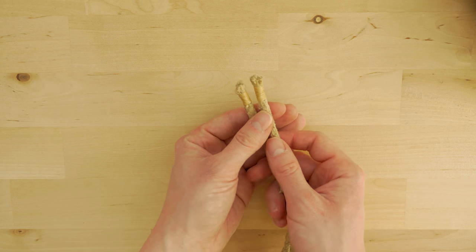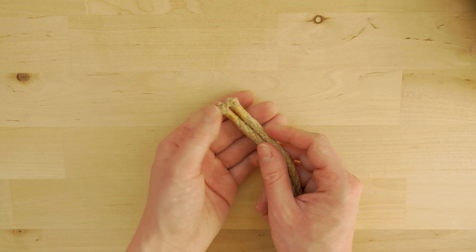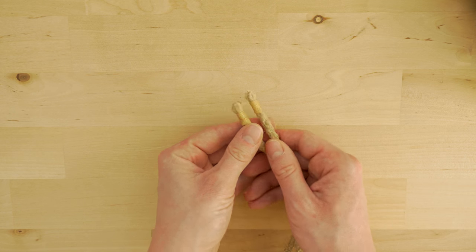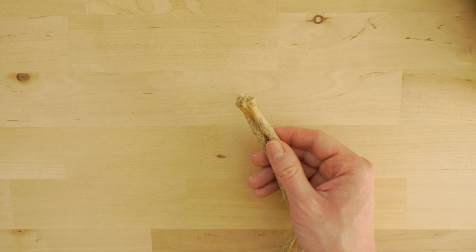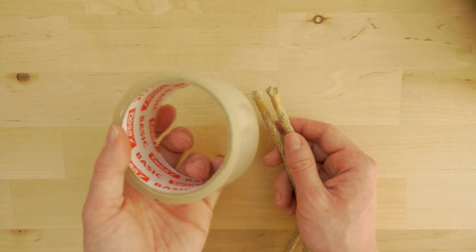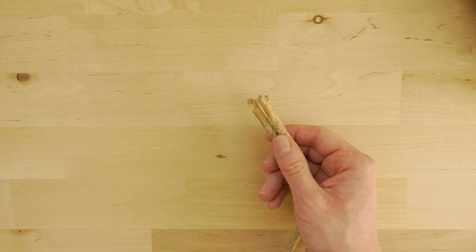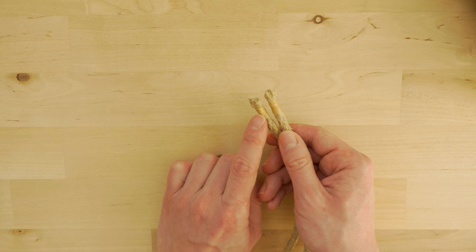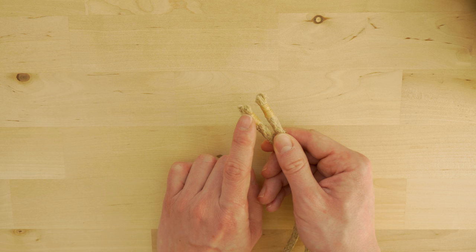Now before we actually start tying our mat, we need to sort out the ends. I use a common whipping technique to whip my ends, which gives it a nice decorative look. If you want, you can also just use some tape and that will work just fine as well. I'm going to show you how to use this technique in a separate video, which you can find in the description of this video below.